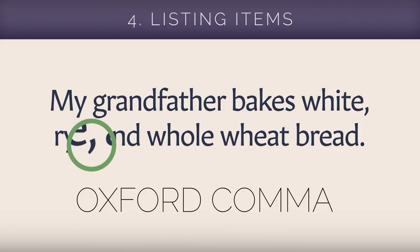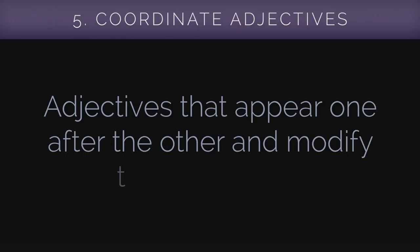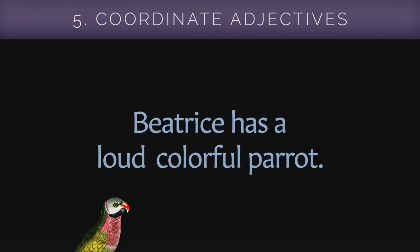Coordinate adjectives refer to adjectives that appear one after the other and modify the same noun. For example, you could explain that Beatrice has a loud, colorful parrot. A comma is needed between these two adjectives to clarify that they modify the same noun — parrot.